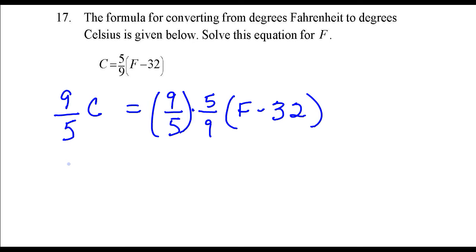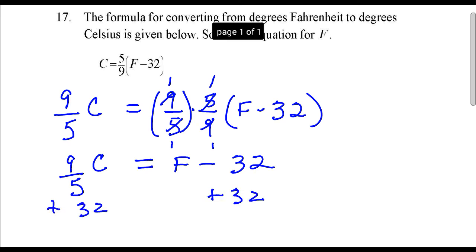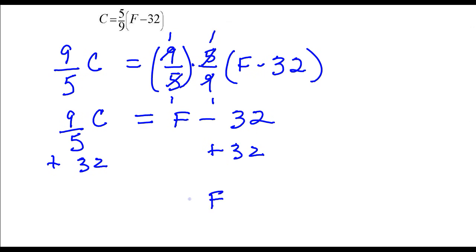Nine over five times c equals nine-fifths times five over nine, which is one. To get f by itself, just add thirty-two to both sides. So f equals nine-fifths c plus thirty-two.